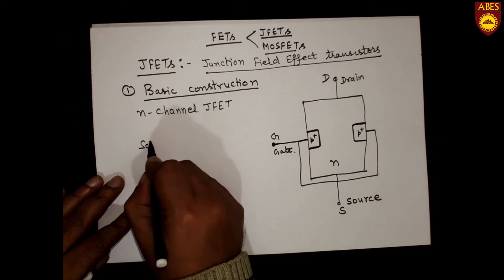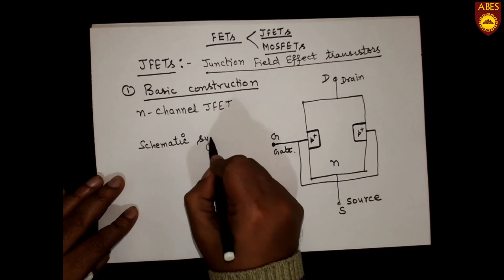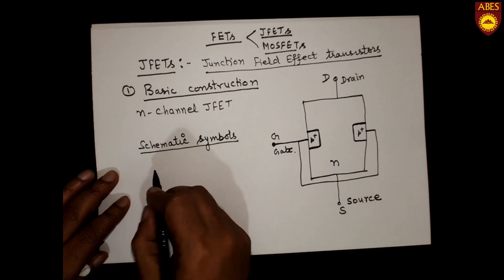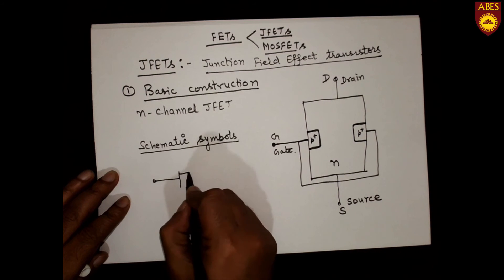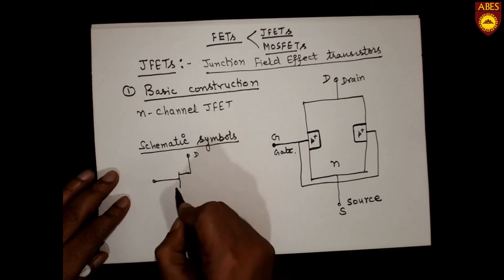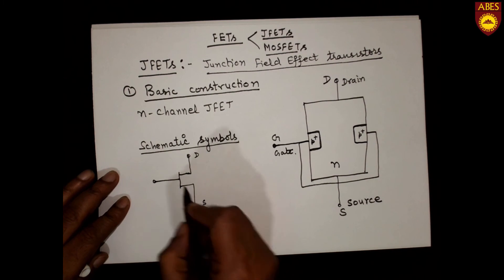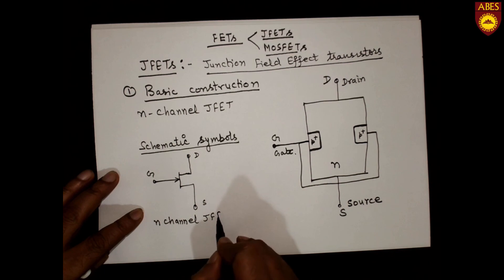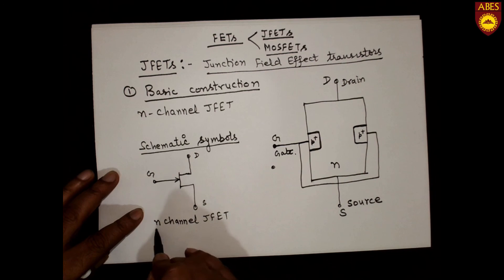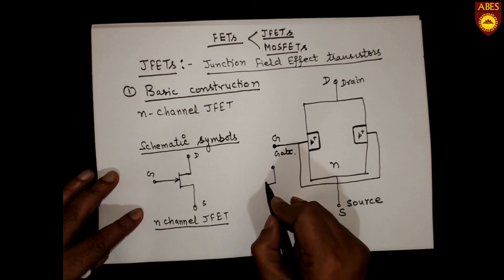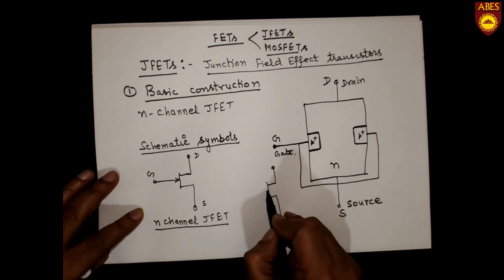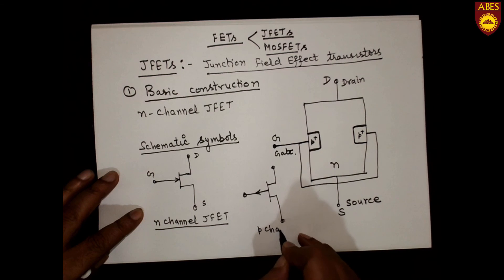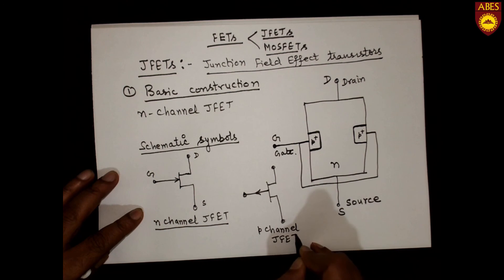The schematic symbols of N-channel and P-channel JFETs are as follows. For the N-channel JFET, the arrow on the gate points inward, with the drain at the top and the source at the bottom. For the P-channel JFET, the arrow on the gate points outward.